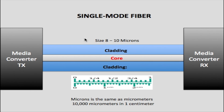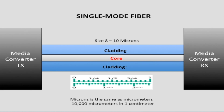To give you an idea of how small this core really is: there are 10,000 micrometers in 1 centimeter, and the core of single mode fiber is only 8 to 10 micrometers within that space. To put this further into perspective, the size of a human hair is between 17 and 181 micrometers, yet this fiber core is only 8 to 10 micrometers — much smaller than the thinnest human hair. That's how small it is — like a pinhole. This tiny size allows light to travel in a straight line, making single mode fiber ideal for long distance communication.